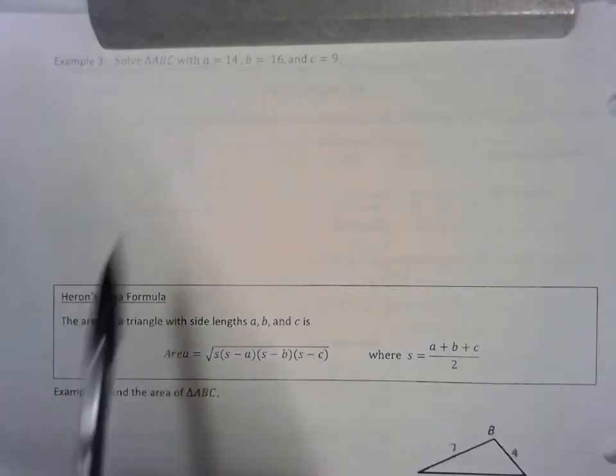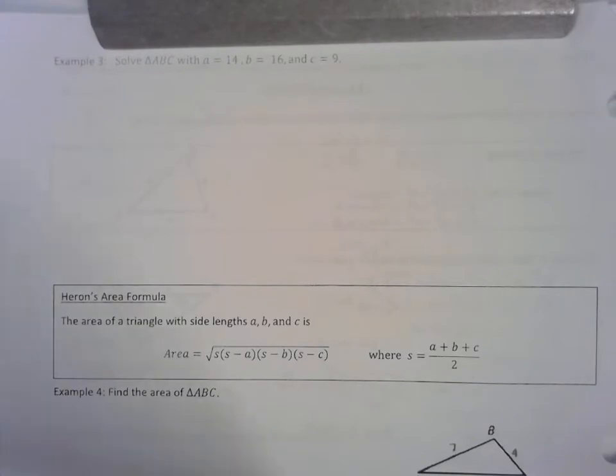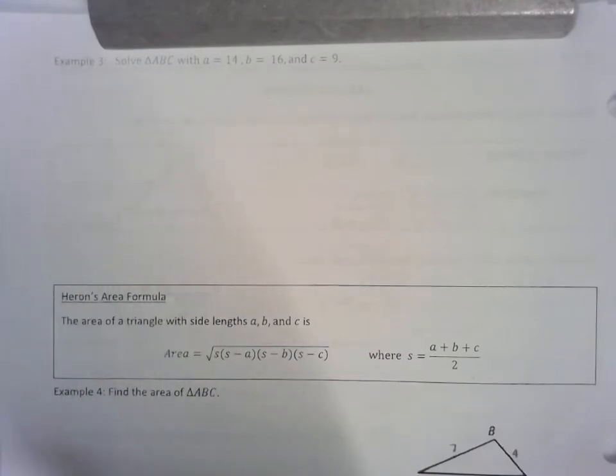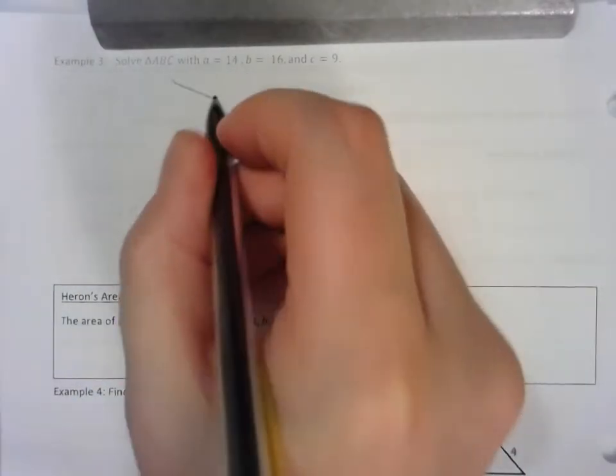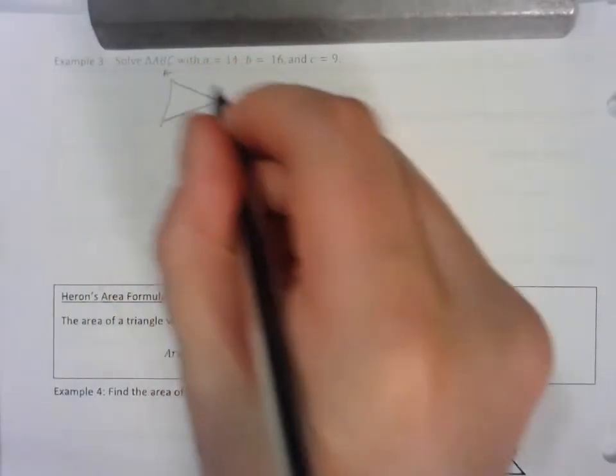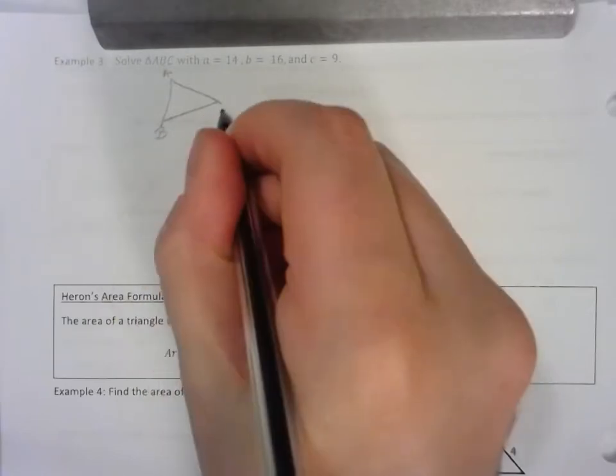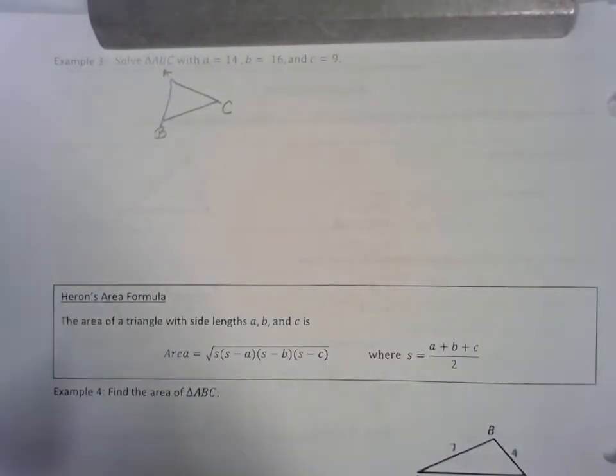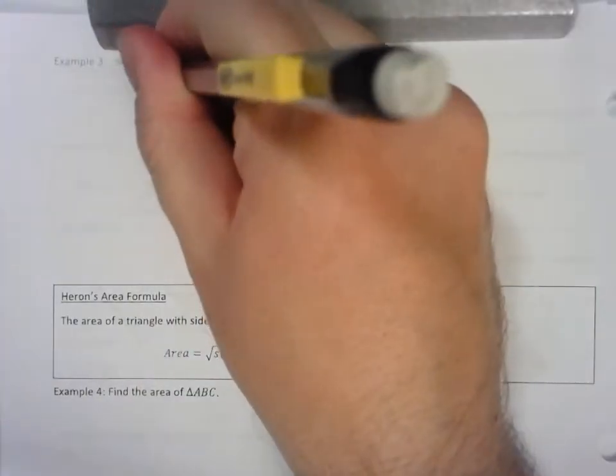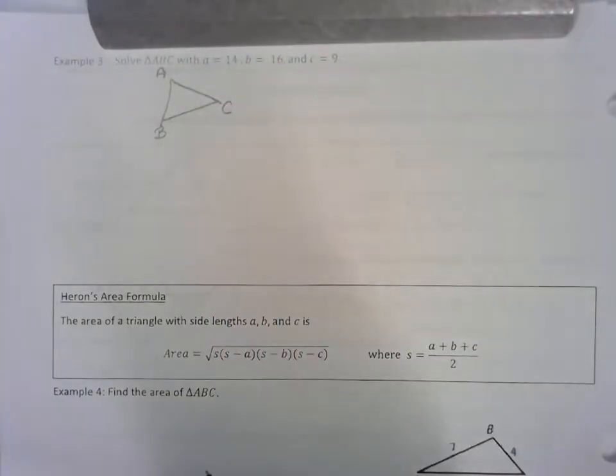We're on to Example 3. We're going to solve triangle ABC given side-side-side. Just to point this out: side-side-side is a triangle congruence theorem, which means that no matter how we have these three side lengths, they're always going to have a unique way of drawing a triangle. There's not more than one way to connect these three side lengths to make more than one different triangle, so there's no ambiguous case when you have side-side-side.